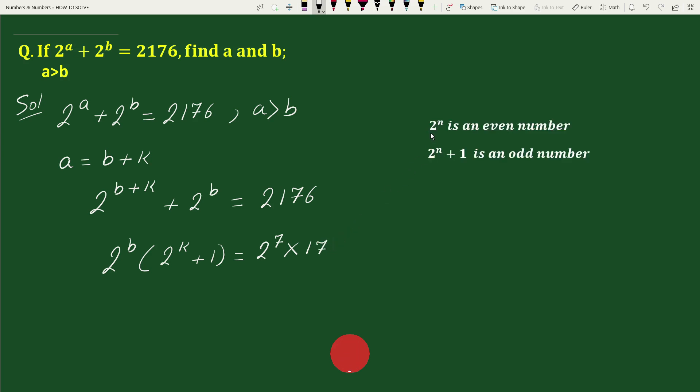Now as you know that 2 to the power n is an even number and 2 to the power n plus 1 is an odd number. Here 2 to the power 7 is an even number so we compare this with 2 to the power b. Here 17 is an odd number so we compare this with 2 to the power k plus 1.